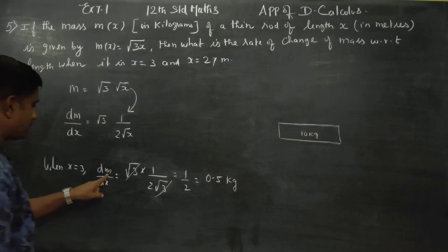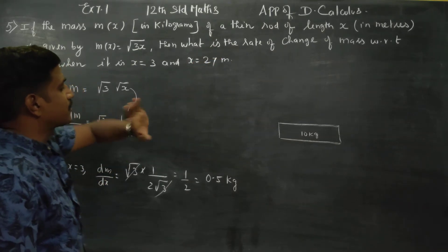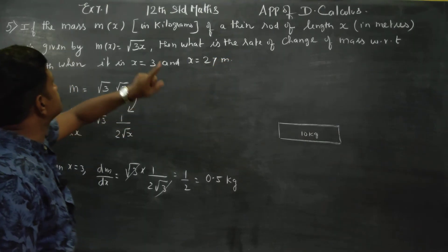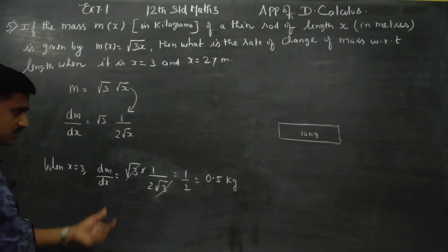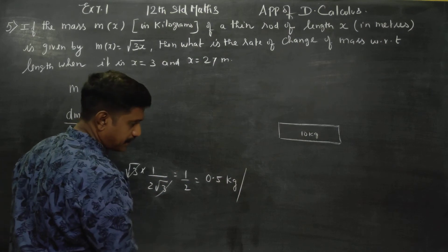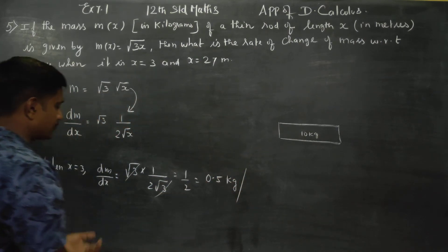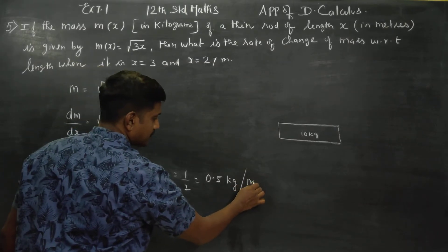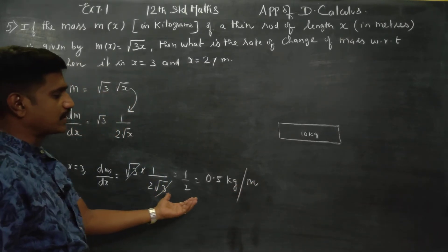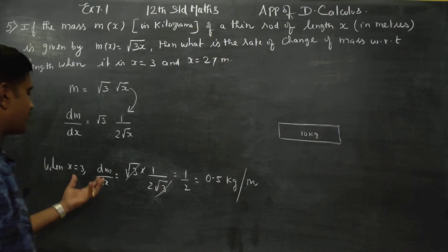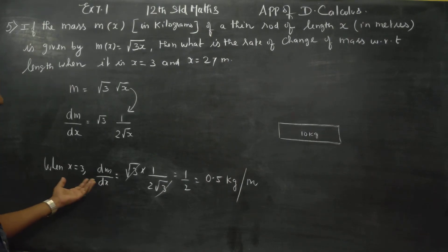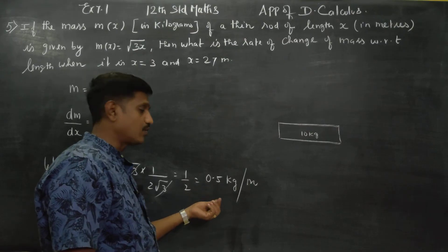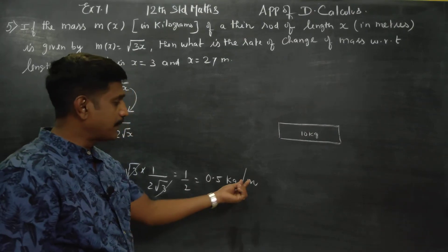1/2 is equal to 0.5 kg. The unit will be given to you — for a thin rod where length is measured in meters, the rate is 0.5 kg per meter. So when x = 3 meters, the mass increase is 0.5 kg per meter.